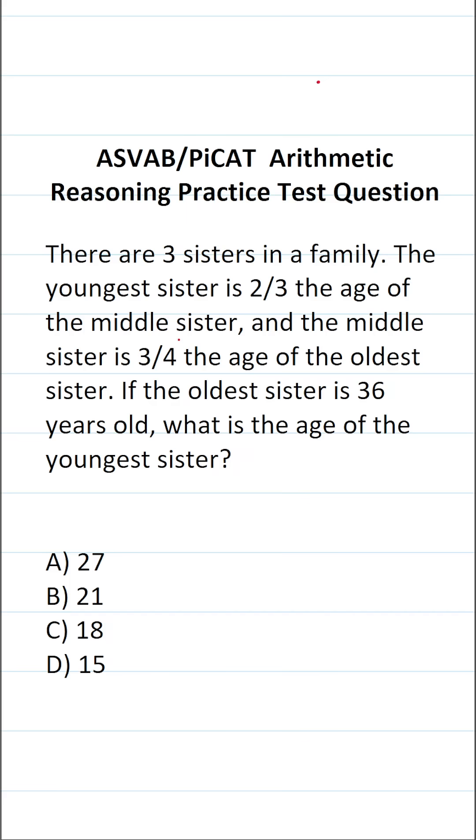So in order to solve this one, we're going to have to work our way backwards. First, we're going to find the age of the middle sister, and we know the middle sister is three-fourths the age of the oldest sister.